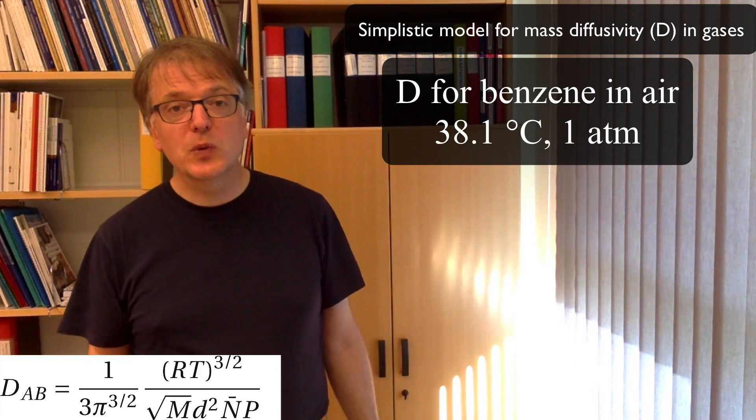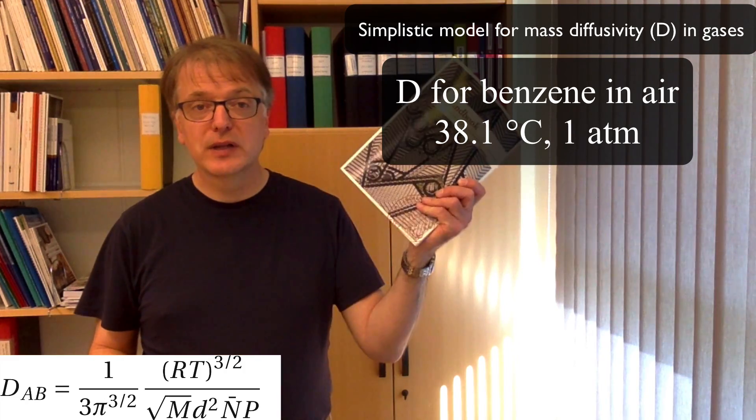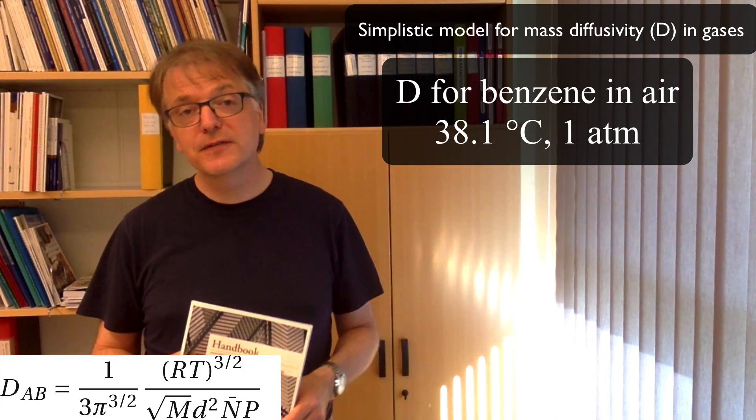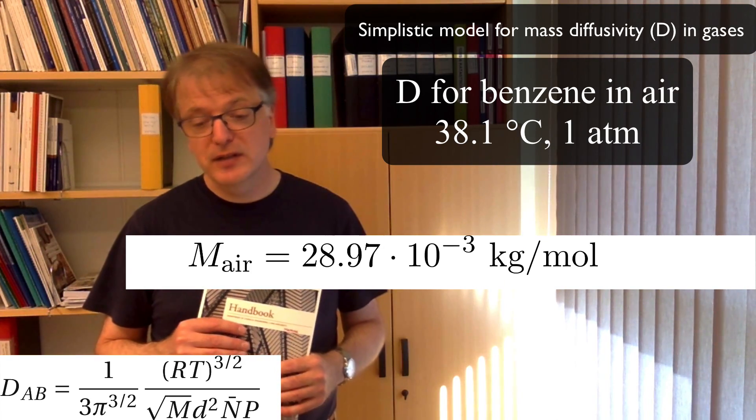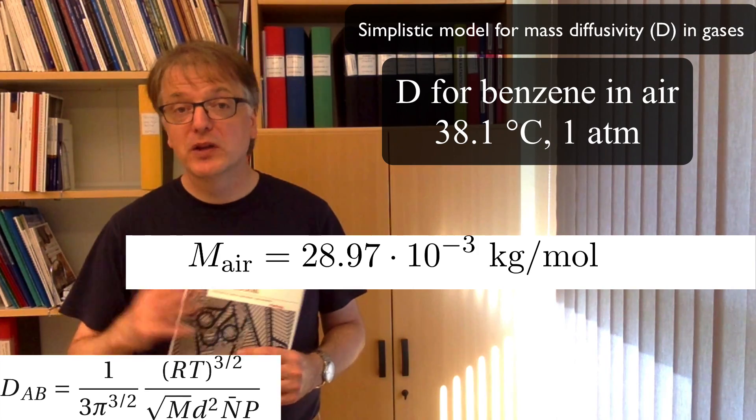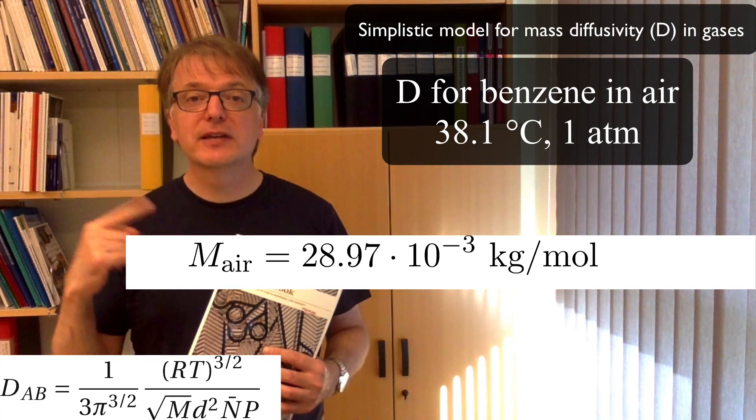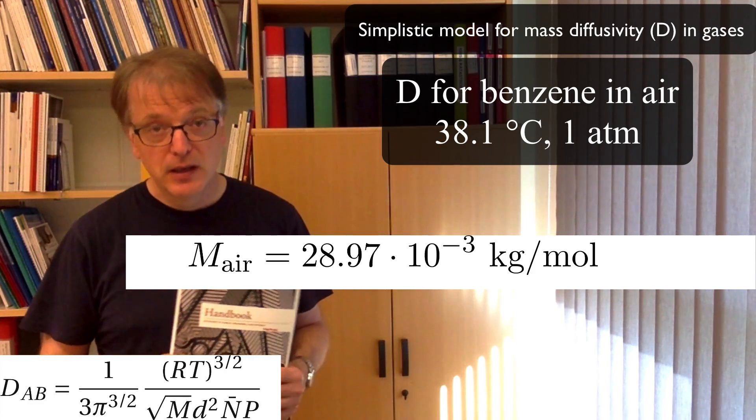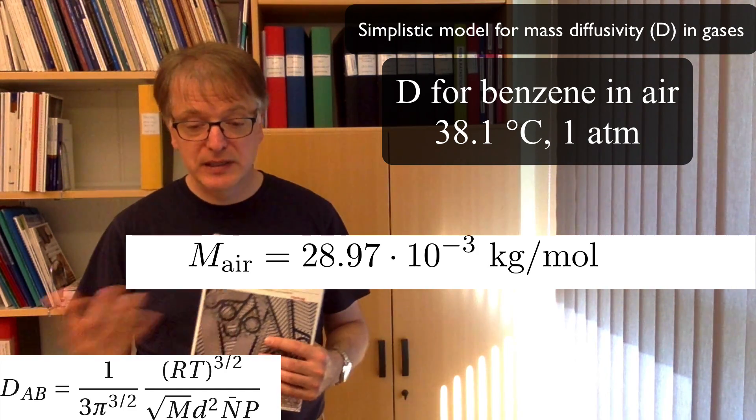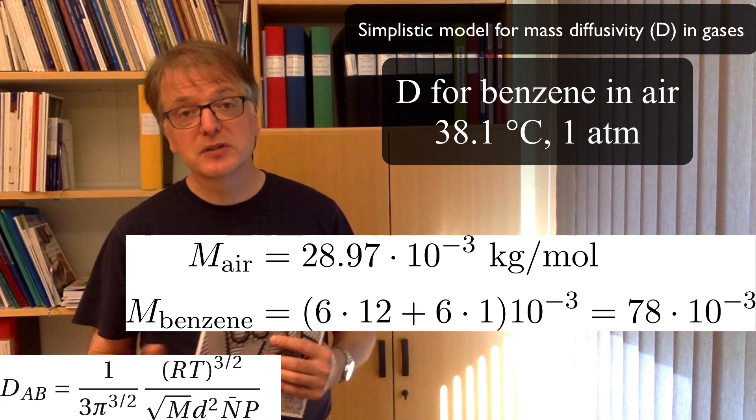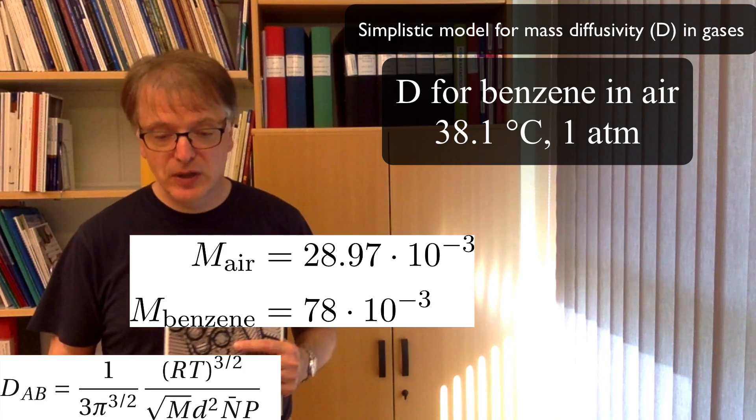So for the molecular weight, we need to look up the molecular weight for air. And you can do that in a compendium like this, or you can calculate it yourself. And it's approximately 28.97 times 10 to the power minus 3 kilogram per mole. You must use SI units. Gram per mole won't work. You need to have kilogram per mole. And molecular weight for benzene that you can calculate. You have six hydrogens and six carbons. So you get approximately 78 gram per mole, so 78 times 10 to the power minus 3 kilogram per mole.